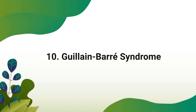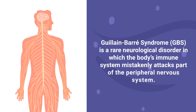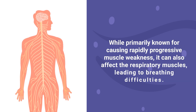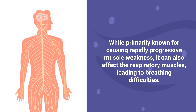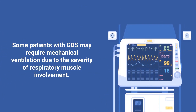Guillain-Barré syndrome is a rare neurological disorder in which the body's immune system mistakenly attacks part of the peripheral nervous system. While primarily known for causing rapidly progressive muscle weakness, it can also affect the respiratory muscles, leading to breathing difficulties. Some patients with this condition may require mechanical ventilation due to the severity of respiratory muscle involvement.